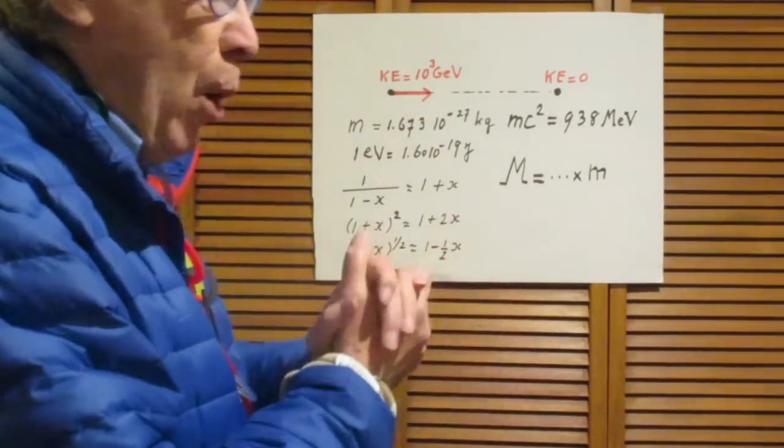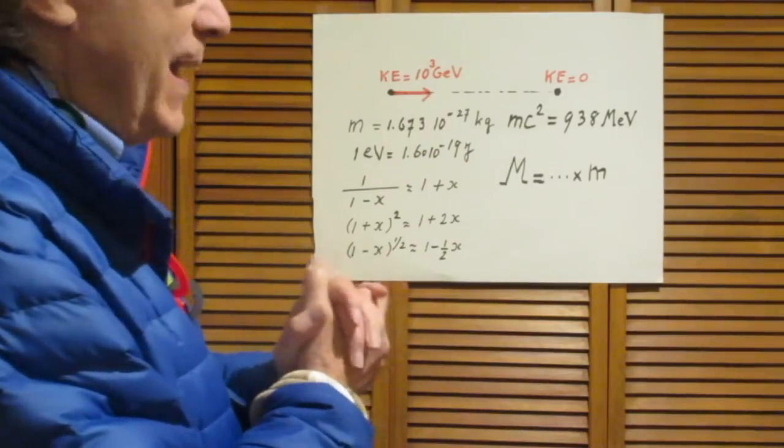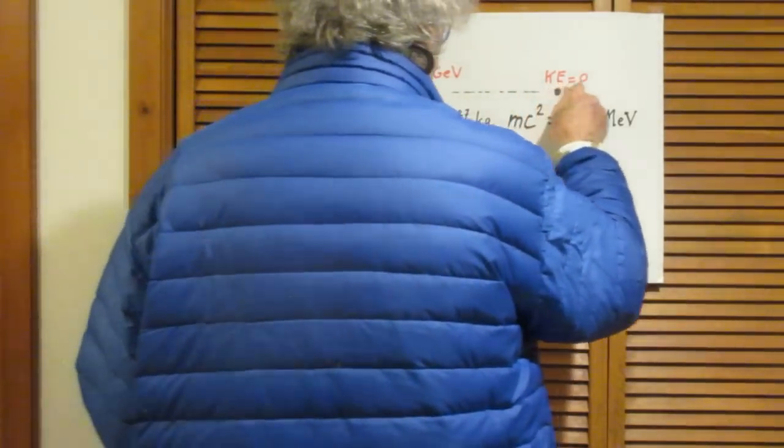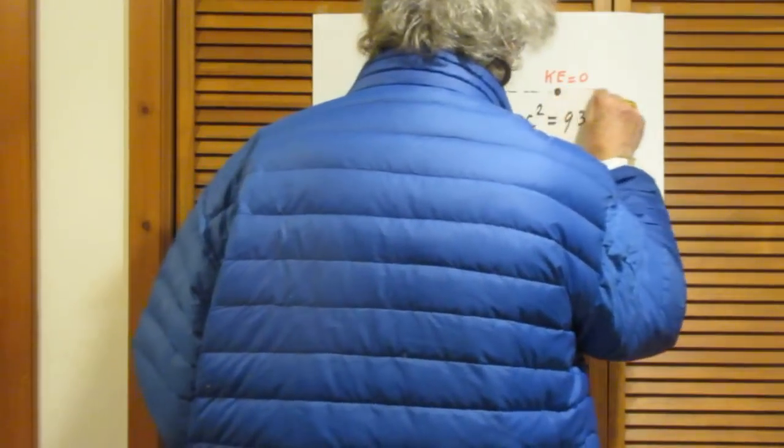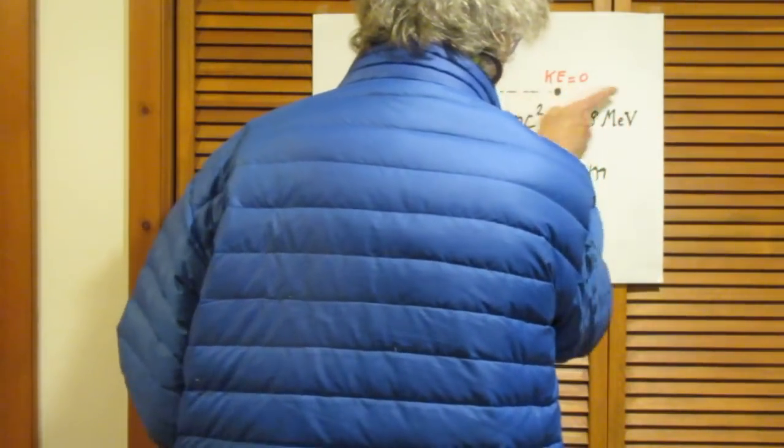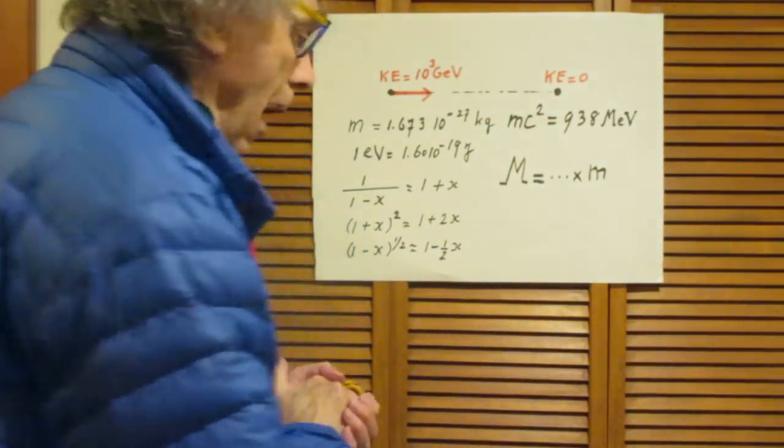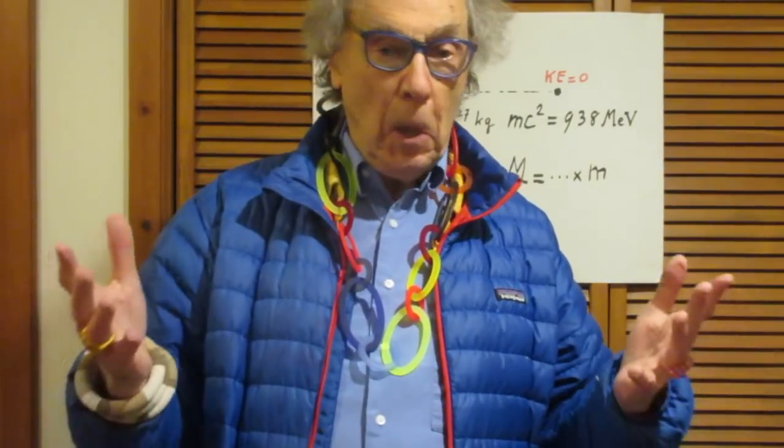They collide and merge — it's a completely inelastic collision. They stick together and then undoubtedly continue to move in the same direction. Since it is an inelastic collision, some of the kinetic energy has been destroyed. This destruction — this energy that is lost — can be used to create new particles. And that's what the problem is about.